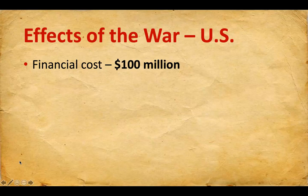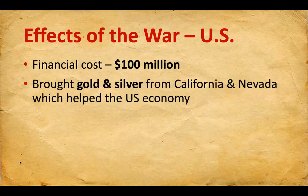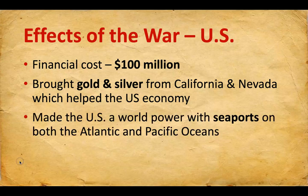The war cost the United States government about 100 million dollars — at the time, an astronomical figure that people could barely even comprehend. Another effect of the war is that gaining the Mexican Cession brought gold and silver from California and Nevada, which helped the U.S. economy. Probably the biggest effect was that it gave the U.S. the Pacific Coast, making the United States a world power with seaports on both the Atlantic Ocean and the Pacific Ocean — a transcontinental nation from one side of the continent to the other.